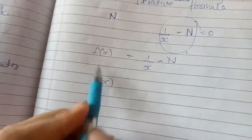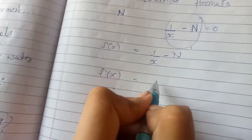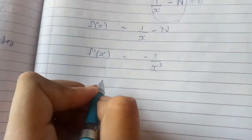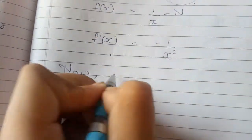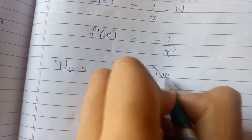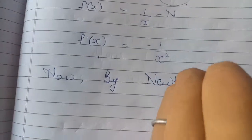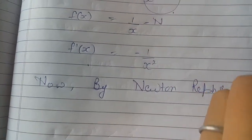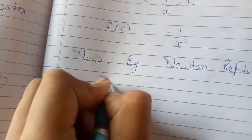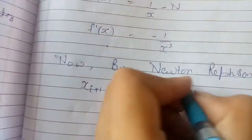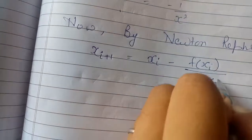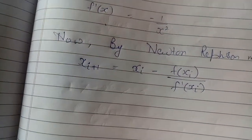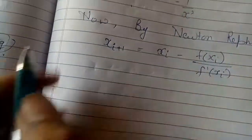f dash x kya hoga — jaise Newton-Raphson method mein karte hain, pehle function kar lete hain, phir uska derivative. Iska derivative ho jayega minus 1 upon x square. Toh ab hum Newton-Raphson method ka formula apply kar denge. Newton-Raphson formula hota hai: x_{i+1} = x_i minus f(x_i) upon f'(x_i).